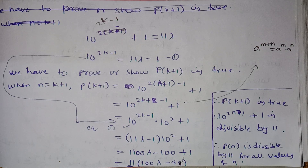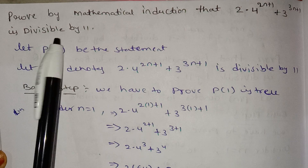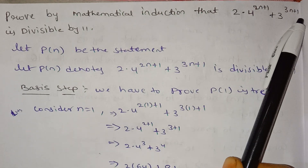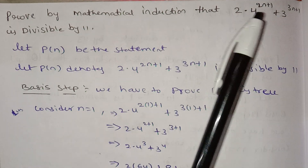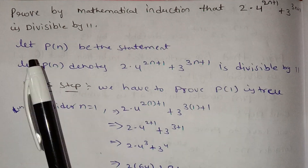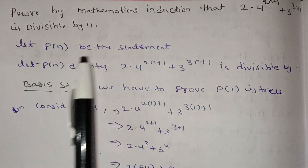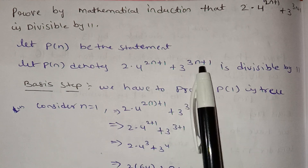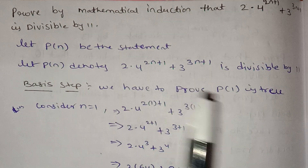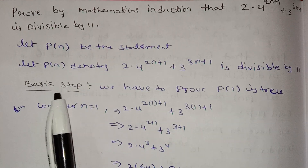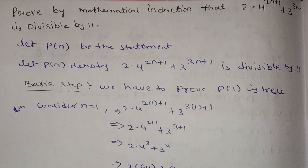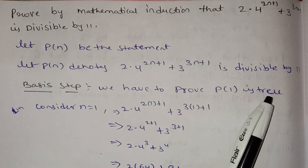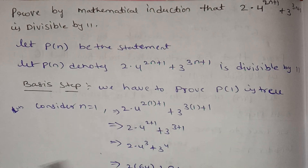Our next question: prove by mathematical induction that 2 into 4 power 2n plus 1 plus 3 power 3n plus 1 is divisible by 11. Let P(n) be the statement that 2 into 4 power 2n plus 1 plus 3 power 3n plus 1 is divisible by 11. Mathematical induction has two steps: basis step and induction step. First, prove P(1) is true.